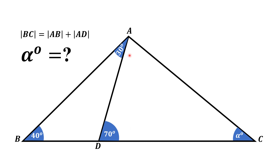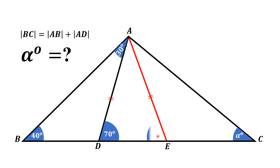Now we draw another line segment from point A to point E on BC such that length AE equals length AD. Since triangle ADE is isosceles, its base angles are equal, so angle AED is 70 degrees. The remaining angle DAE can be found since the two base angles sum to 140 degrees, giving angle DAE equal to 40 degrees.